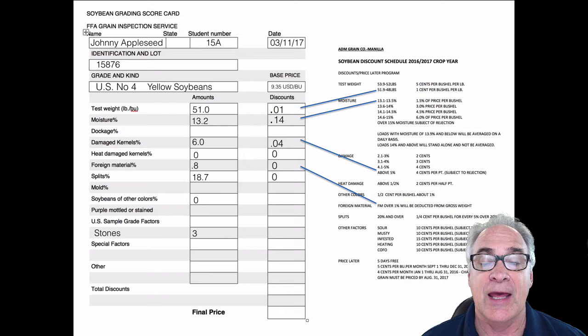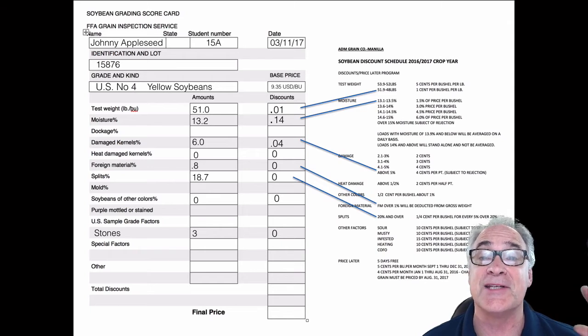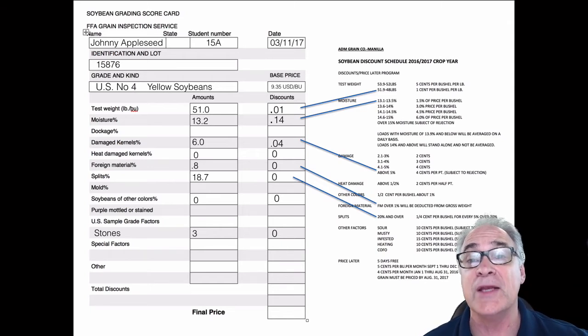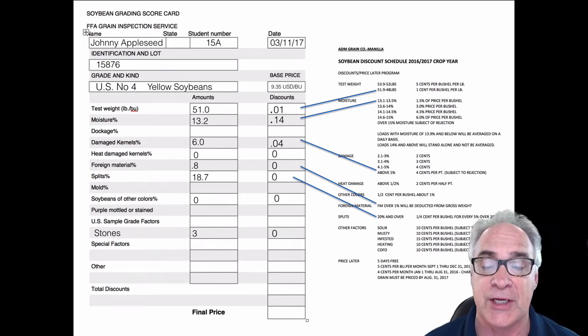As we move on, that goes to zero because there's zero heat damaged ones and zero foreign material, and we just keep on dropping those zeros because there are no different colors. And then of course the stones are zero deduction because it takes up to 10 stones according to the USDA grading sheet to actually bring about any kind of a load rejection.